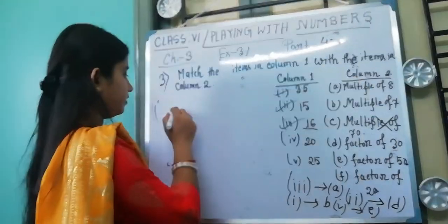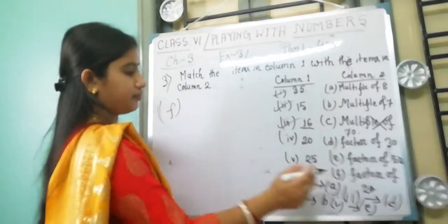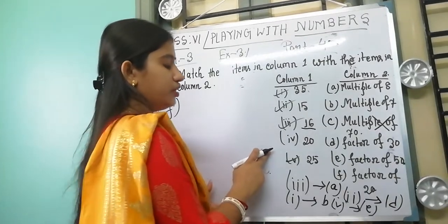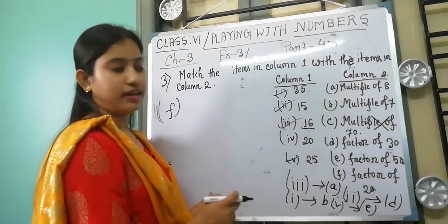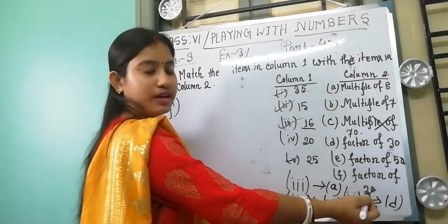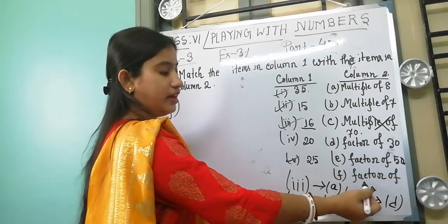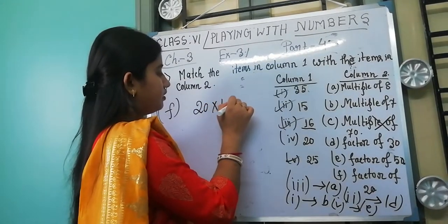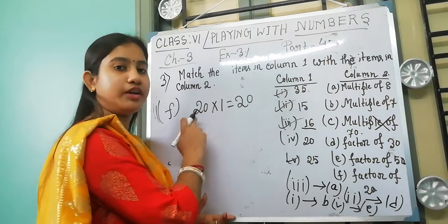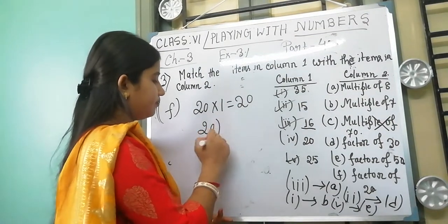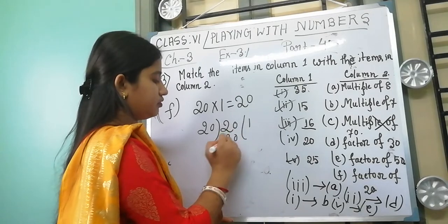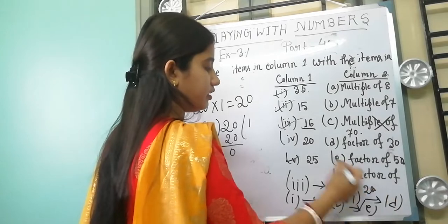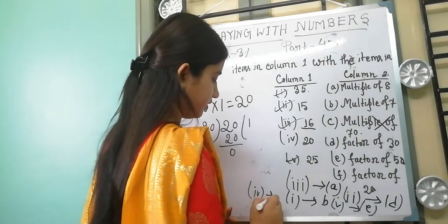Now number F: factor of 20. The only remaining number in column 1 is 20. We know that every number is a factor of itself — 20÷20=1 with remainder 0, so 20 is a factor of 20. Therefore number 4 matches with F.